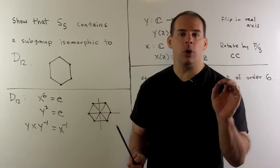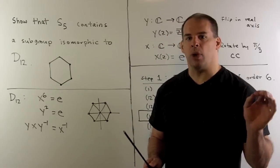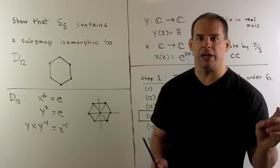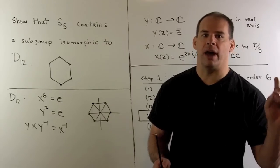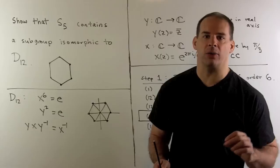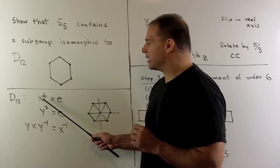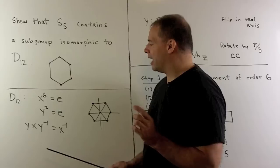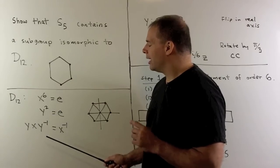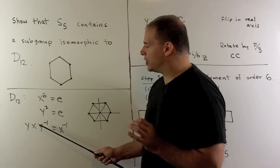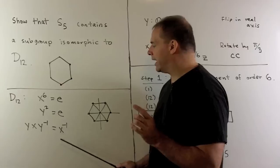Our approach is to describe D12 in terms of generators and relations, and then we'll look for elements in S5 that satisfy the relations. We're looking for an element X of order 6, element Y of order 2, and we want that if we conjugate X by Y, we get X inverse.